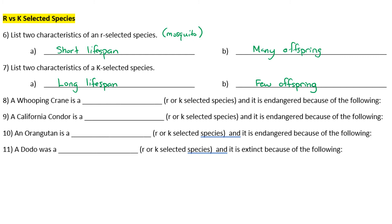Number eight: a whooping crane is a K-selected species and is endangered because of habitat loss, being hunted for their feathers and meat, and a slow population growth rate as a result of a long time to reach sexual maturity — 5.4 years.